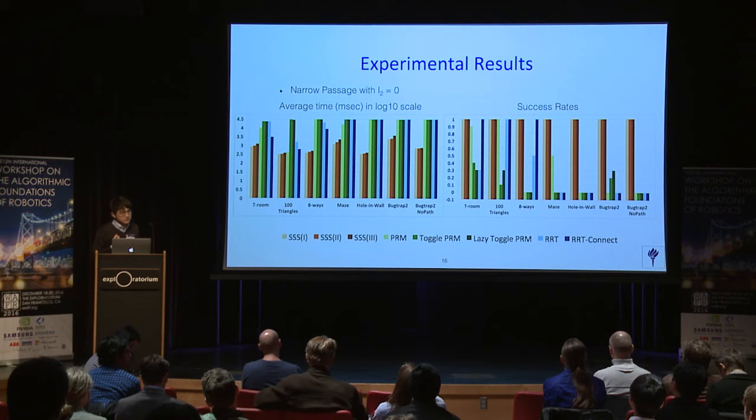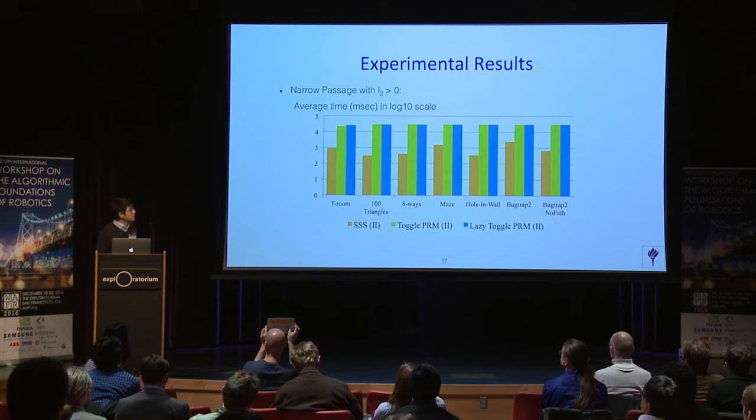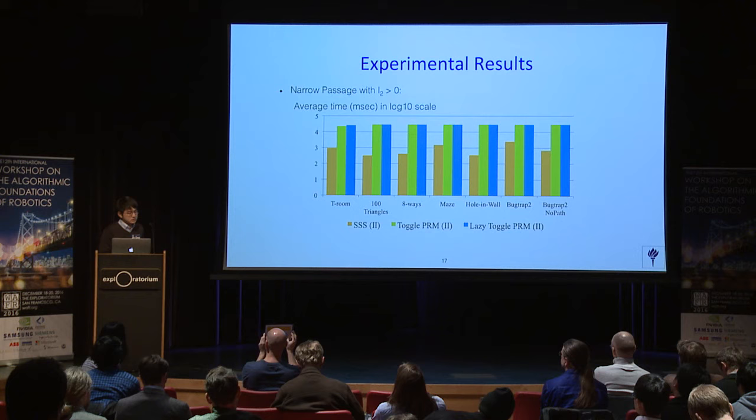Furthermore, under the same setting with Link 2 greater than zero, we compared our method to both toggle PRM and lazy toggle PRM, which target the narrow passage problem. We still achieve better performance.